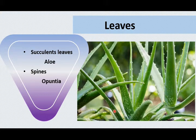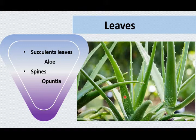In leaf succulents like Aloe, the leaves swell remarkably and become very fleshy, owing to storage of excess water and latex in them. Plants with succulent leaves generally develop a reduced stem. Examples of leaf succulents are Aloe, Kleinia ficoides, and several members of the family Chenopodiaceae.